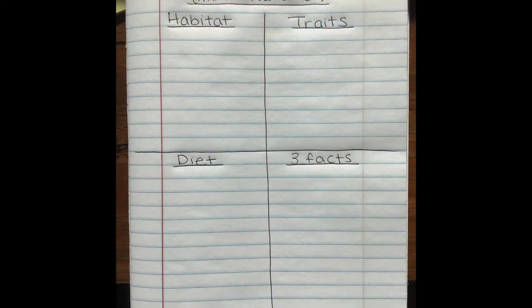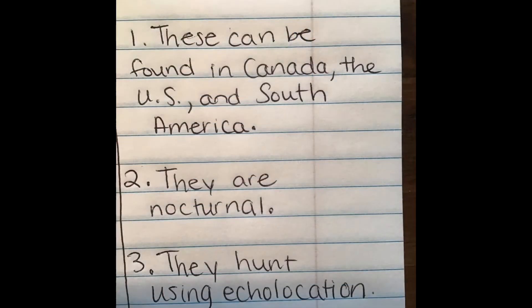The last box on our four-square notes is 'three facts.' I need to use the web page and find three facts that I have not already written on my note sheet, and they should be from that website only. I went back and found three facts I haven't already used. I wrote complete sentences — starting with a capital and ending with a period. Number one: 'These can be found in Canada, the US, and South America.' Number two: 'They are nocturnal.' Number three: 'They hunt using echolocation.' Notice I capitalized proper nouns throughout.